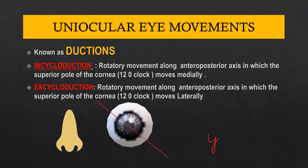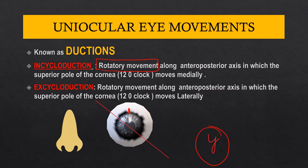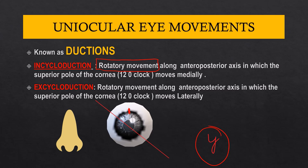Now, what about the movements along the Y axis, which is an axis passing perpendicular to the pupil? These movements are incycloduction and excycloduction. Incycloduction is a rotatory movement along this Y axis, also called the anterior-posterior axis, such that the superior pole of the cornea moves medially. Excycloduction is totally opposite: the superior pole of the cornea moves laterally.